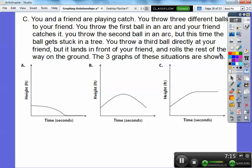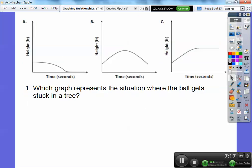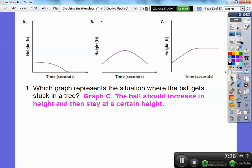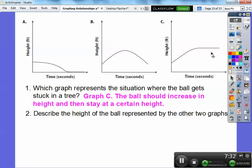So the three graphs of those situations are below right there. So which graph represents the situation where the ball gets stuck in a tree? That would be this one right here. It's stuck way up here in the height of the tree right there. So graph C, the ball should increase in height and then stay at a certain height in the tree in the time. So it's stuck in that tree for that time period. Here's the time in seconds down here.